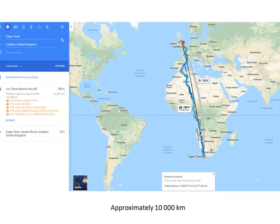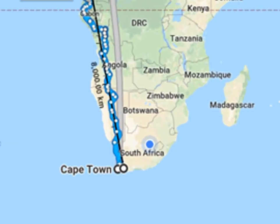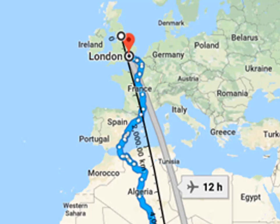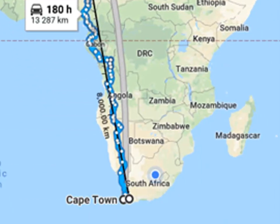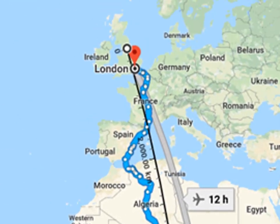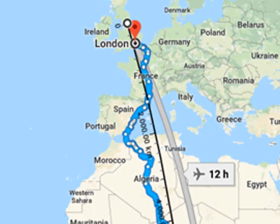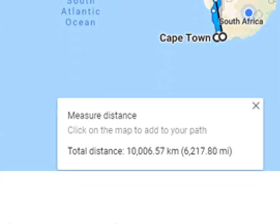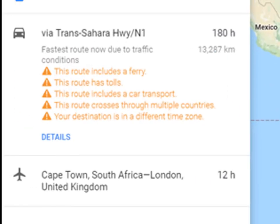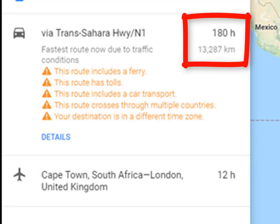To help us understand this, let's look at a map. Here I have the route from Cape Town to London mapped out. Cape Town is in the tip of Africa, and London is in the United Kingdom, in England. The distance between them, in a straight line, is approximately 10,000 kilometres. Google Maps tells me that if I want to drive from Cape Town to London by car, the route will be 13,287 kilometres long, and it will take me 180 hours.